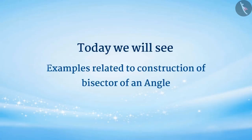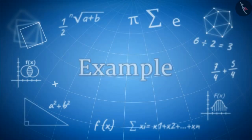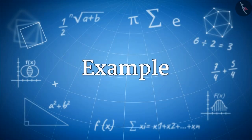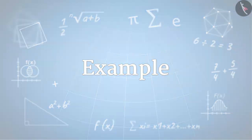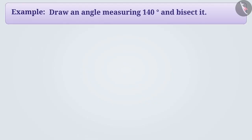Today, we will see some examples related to the construction of the bisector of an angle. Draw an angle measuring 140 degrees and bisect it.